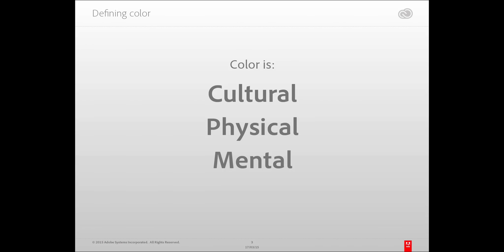So let's try to define color. Color can be divided into different kinds of properties. The first one we will look at today is the cultural part. There are also physical properties and it's a mental construction. So let's focus on the cultural part.